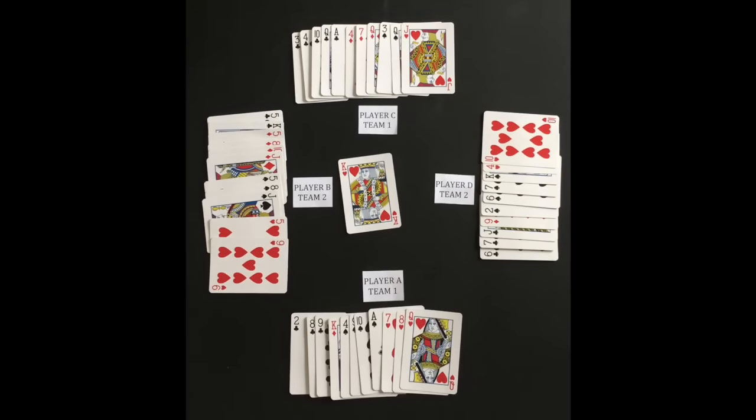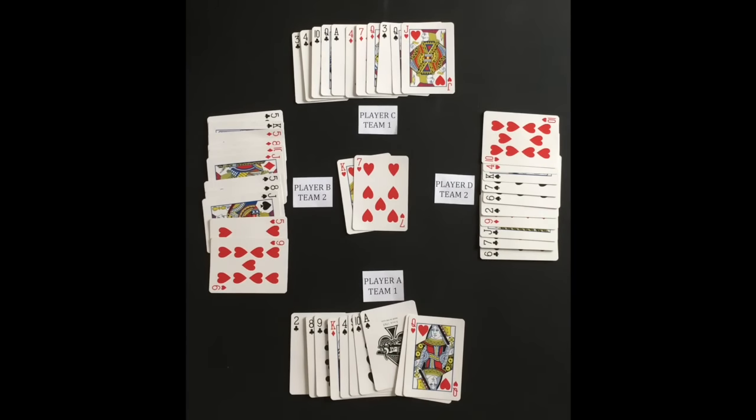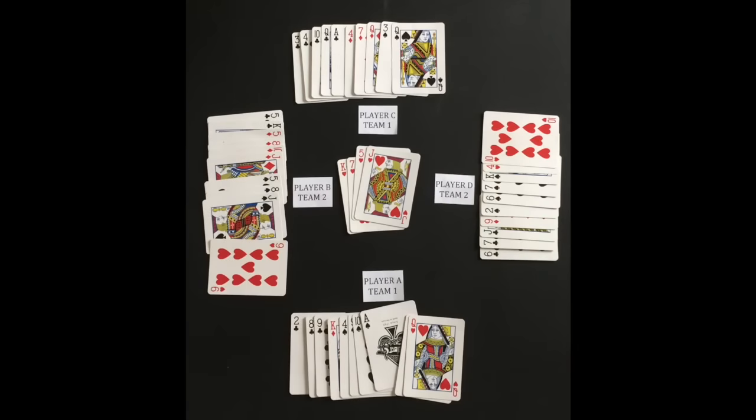Player D leads the next trick with the king of hearts. Players follow suit and again player D wins the trick with the highest ranking card.